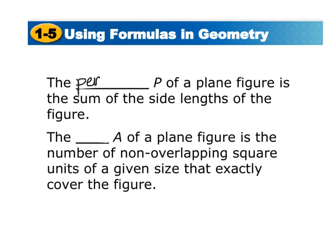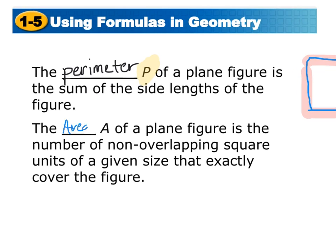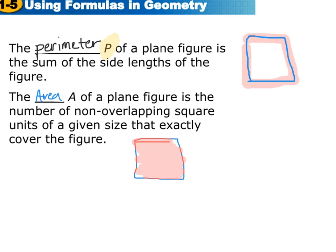The perimeter, which is often called P, of a plane figure is the sum of the side lengths of the figure. So if we had a square, the perimeter would be the outside of the square — if we walked along the outside, that would be the perimeter. The area A of a plane figure is the number of non-overlapping square units that exactly covers the figure, so the area is everything on the inside. Perimeter is the outside barrier while area is the inside.